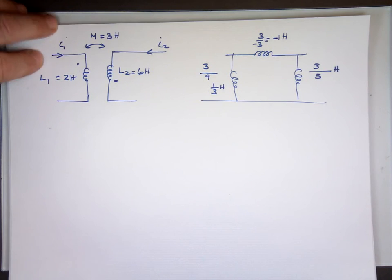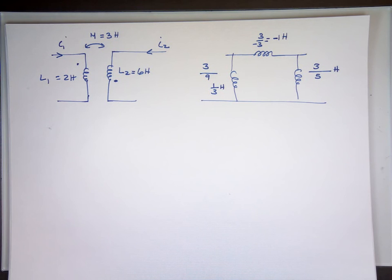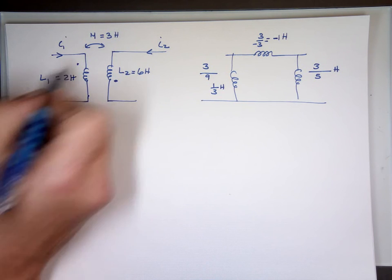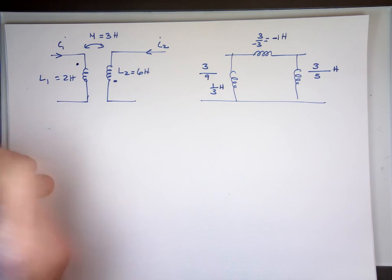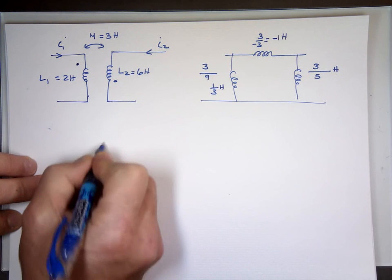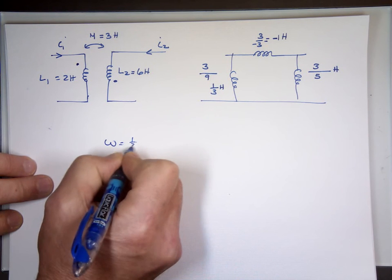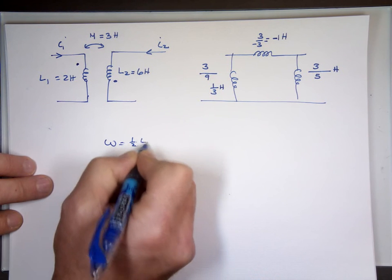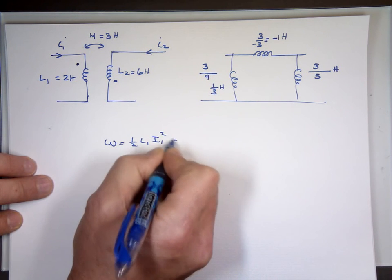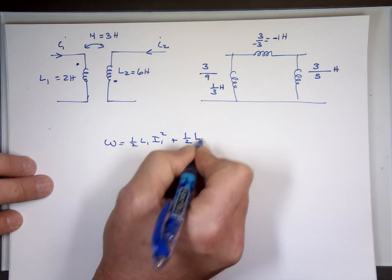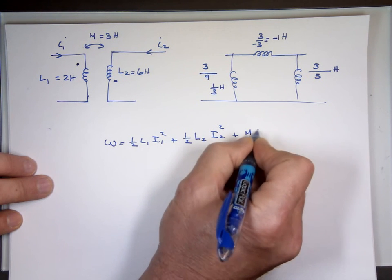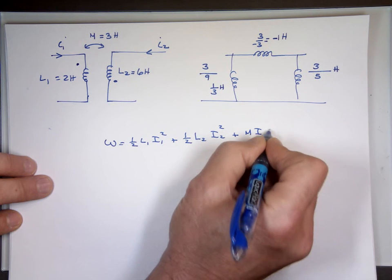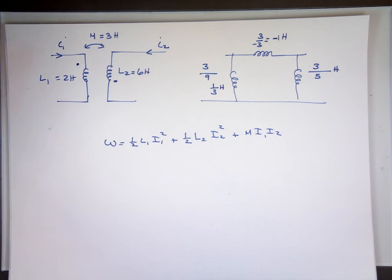Again, if this doesn't bother you, you can leave it. And the energy stored in the system is: ½·L1·I1² plus ½·L2·I2² plus M·I1·I2. That's the total energy stored.